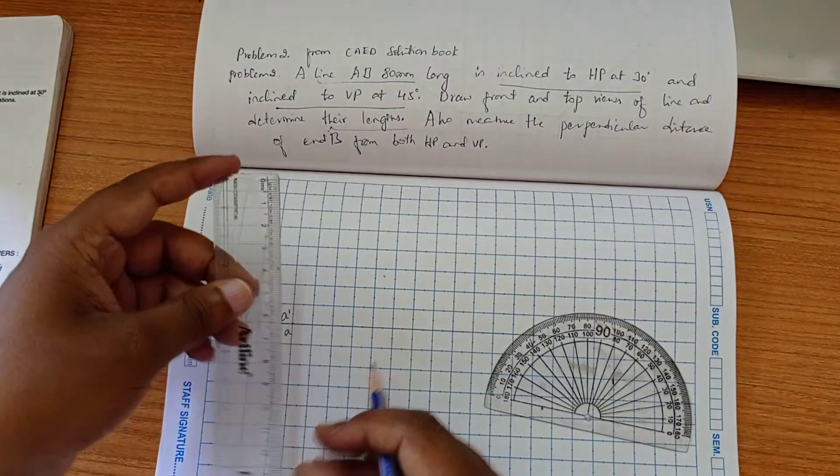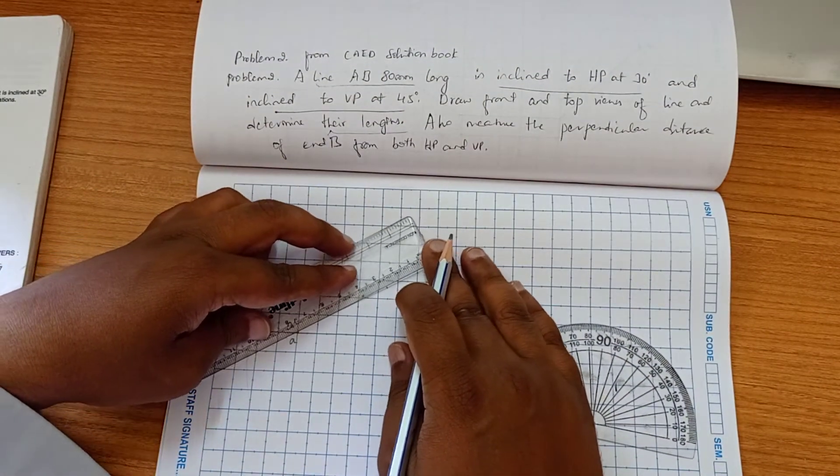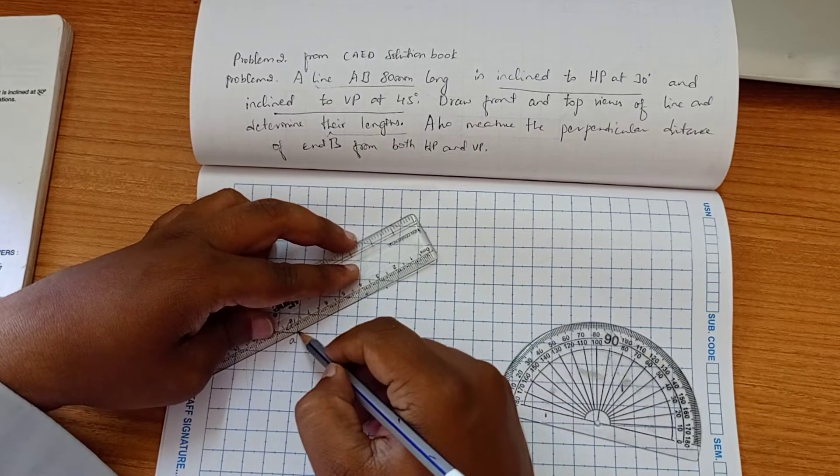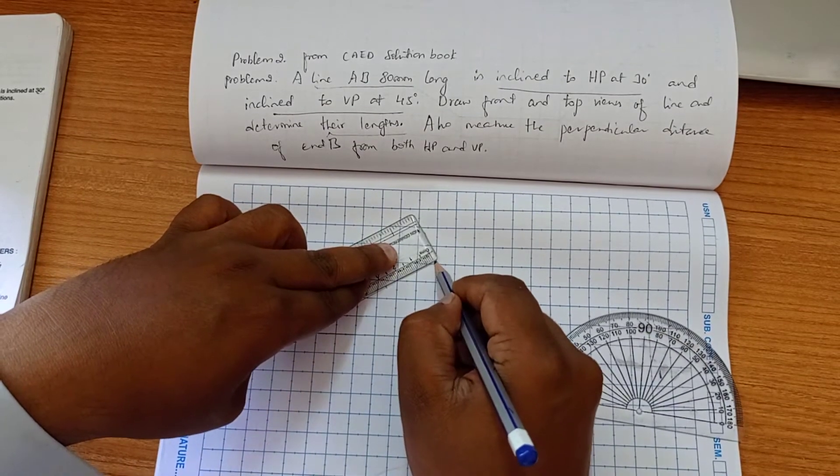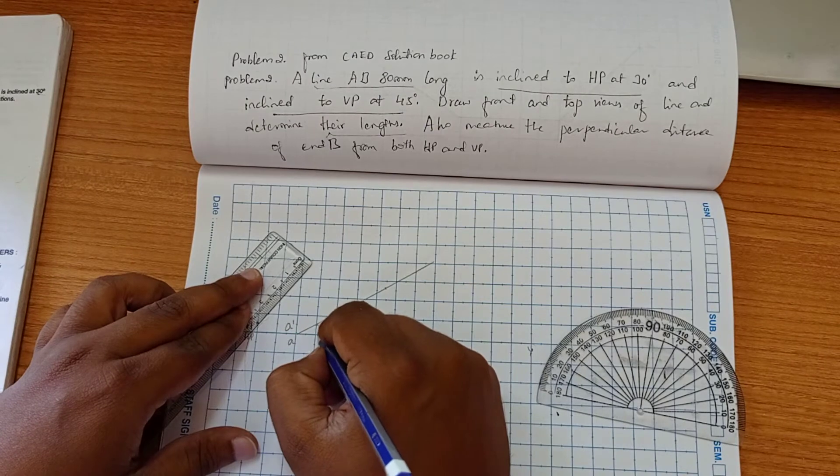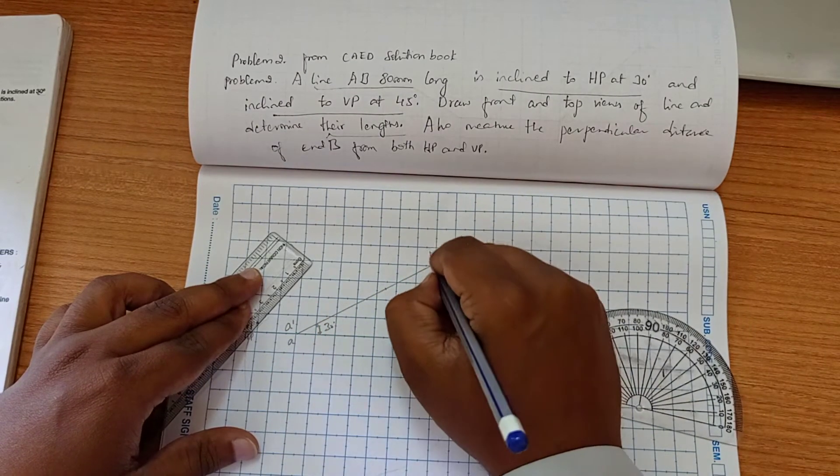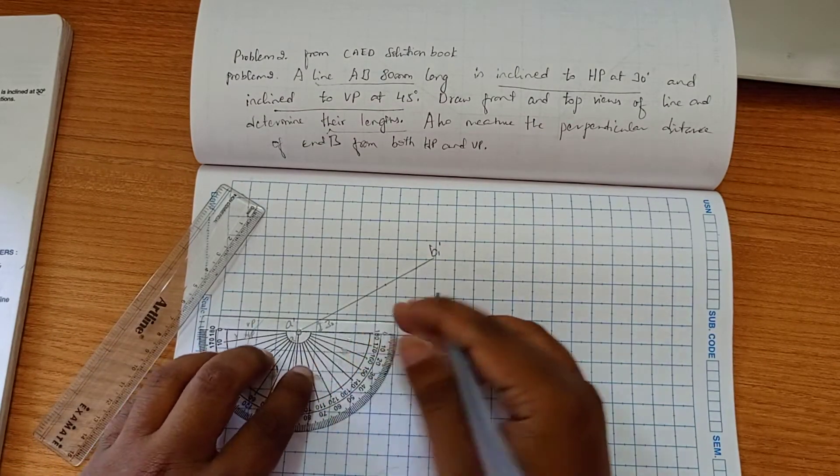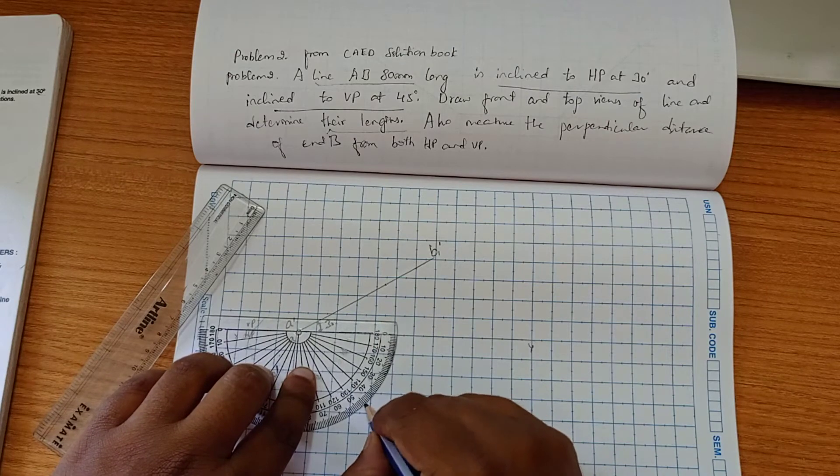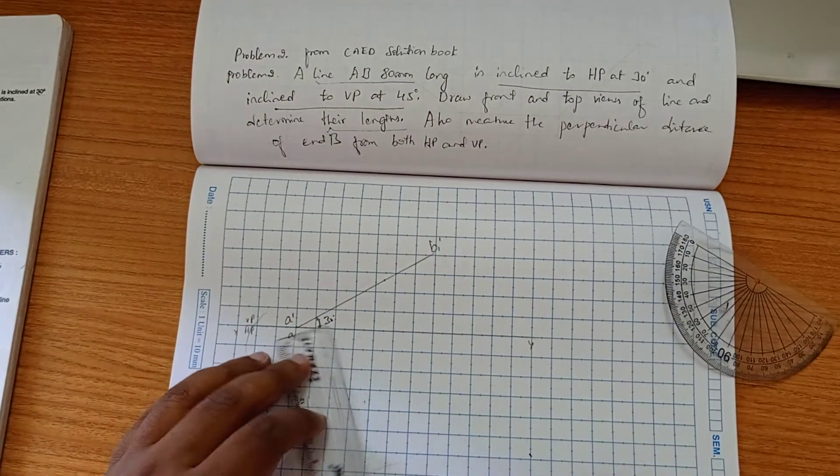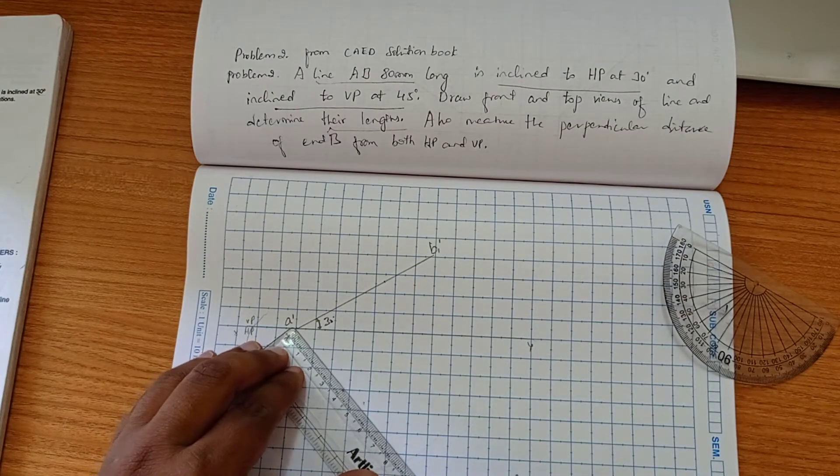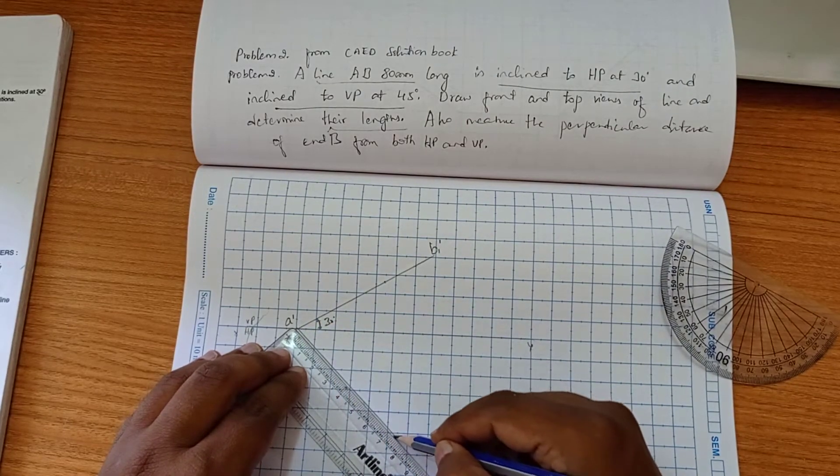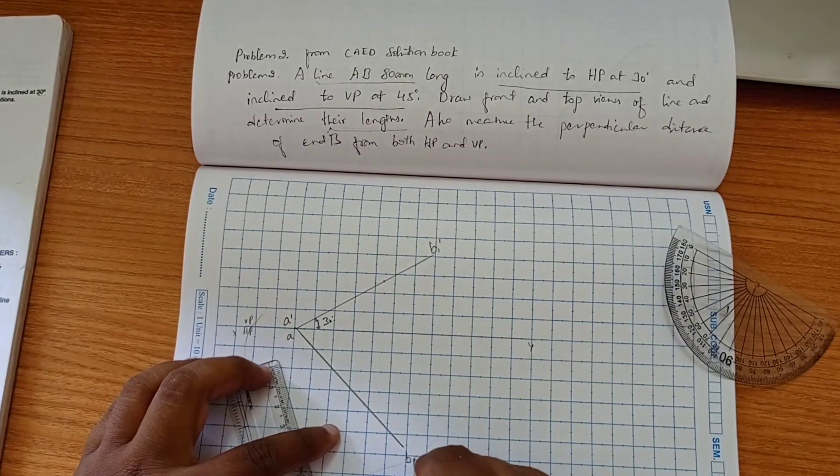Here we have to draw a line of length 80mm passing through this point. So this is 30 degrees. This is B1'. Similarly, we have to mark another angle at 45 degrees, and this also having a length of 80mm. So this is B2.